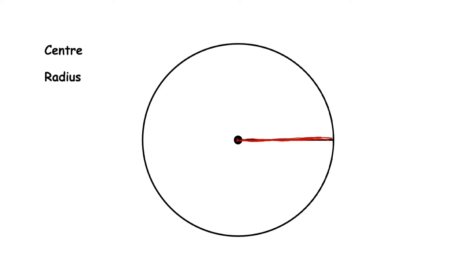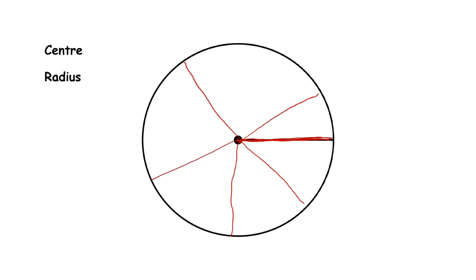Every circle has uncountable radii. You can see that here we have another radius — like that we can get many radii. So a circle has uncountable radii, and all radii are equal in length.